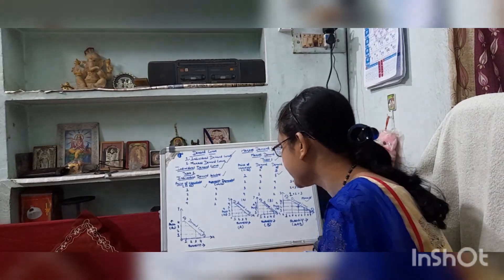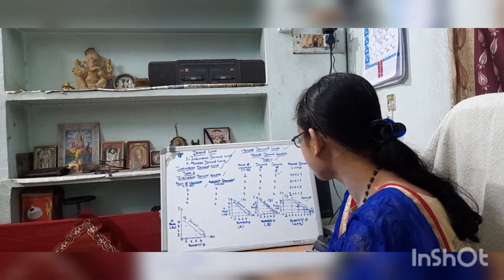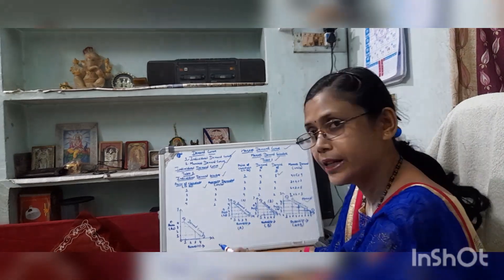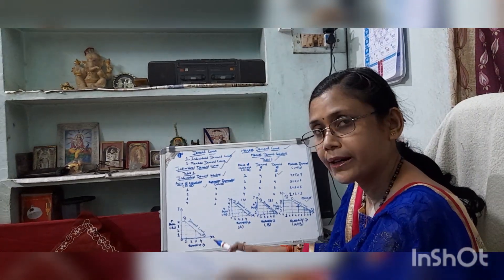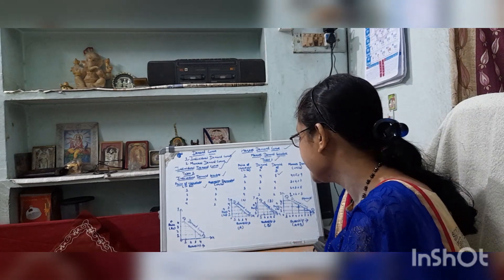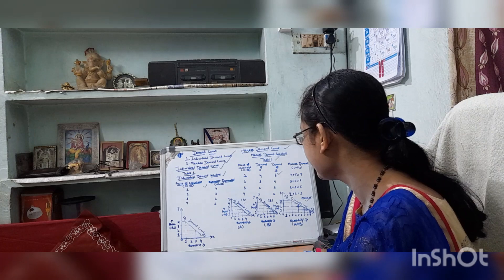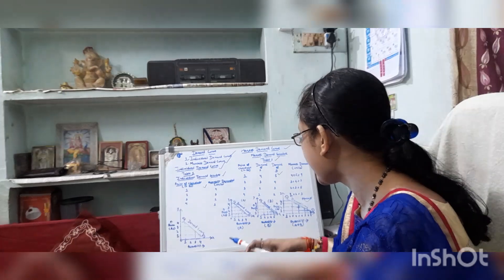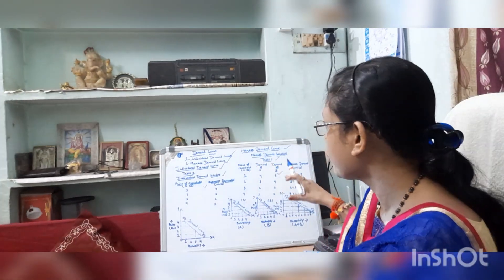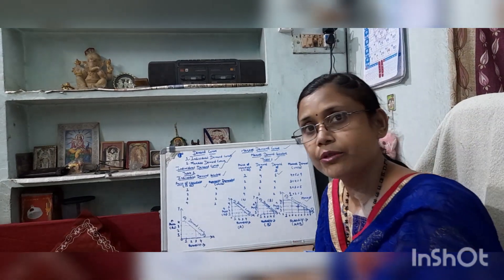The market demand curve also slopes downward, just as in the case of the individual demand curve. This also shows the inverse relationship between price and demand. So these are all about the demand curve. Thanks for watching.